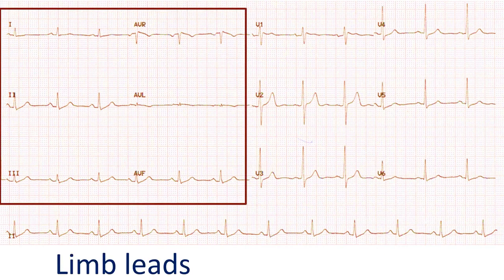The other leads are known as limb leads. Limb leads are produced by combining electrical signals from the limbs, arms and legs in various specified combinations within the machine.